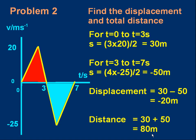If you are asked for the average velocity, you would divide minus 20 meters by 7 seconds. If you are asked for the average speed, you divide 80 meters by 7 seconds.